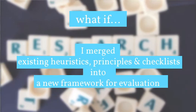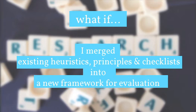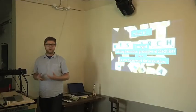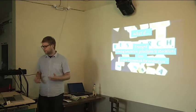So there is quite some mystery about it. We'll get to that in a few slides. The big idea that I had is I knew some of those principles. I knew about Jakob Nielsen. I knew about the UX Honeycomb. I knew that there was something weird called heuristics, but I didn't get the fine details of it. But my big what-if question was: what if I merged existing heuristics, principles, and checklists into a new framework of evaluation? That was the main goal.